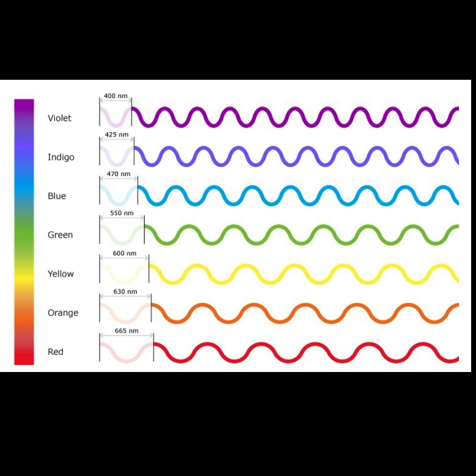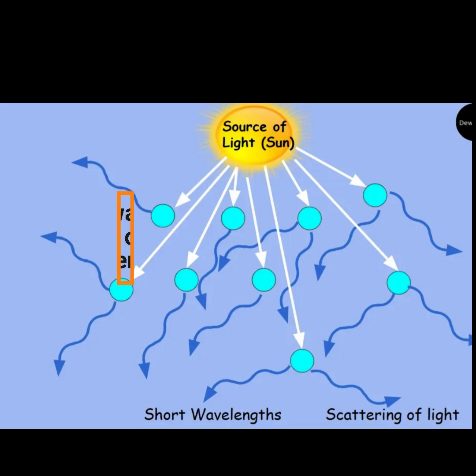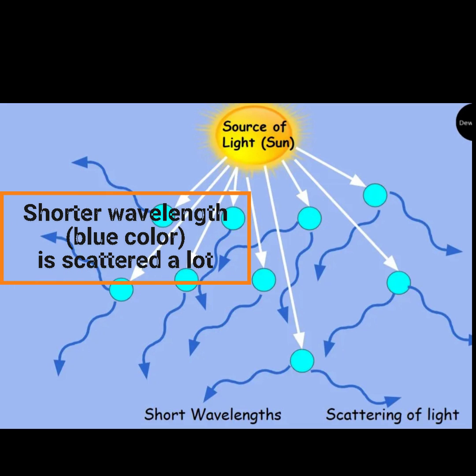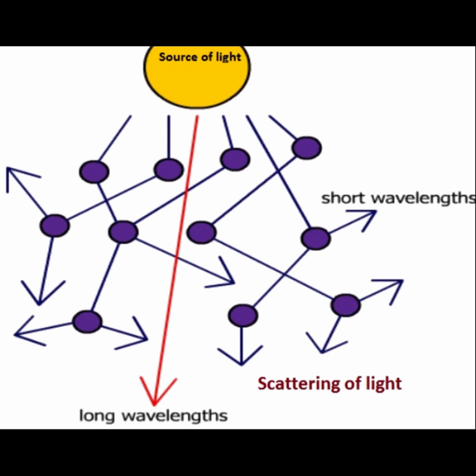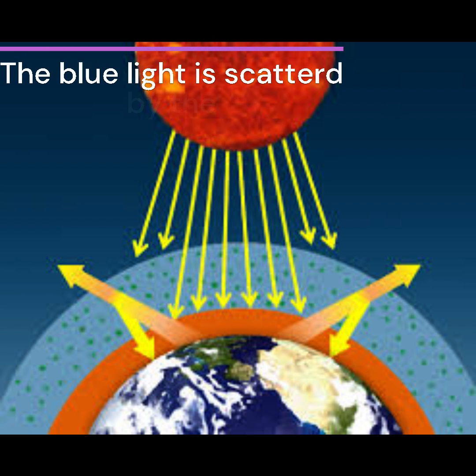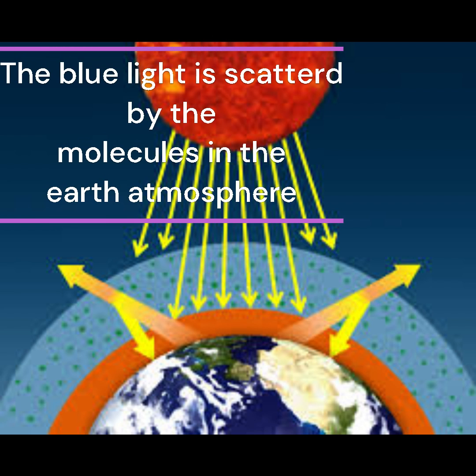while blue and violet light have much shorter wavelengths. It's the shorter wavelengths of light that are more likely to be scattered or absorbed and re-emitted in a different direction by the air and gas molecules in the earth's atmosphere.